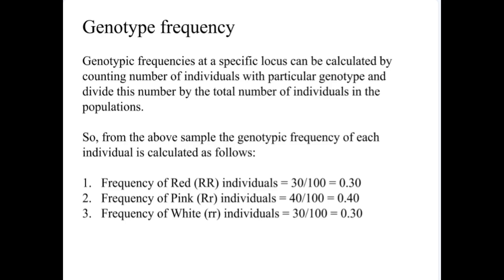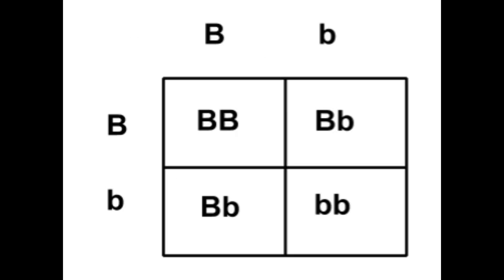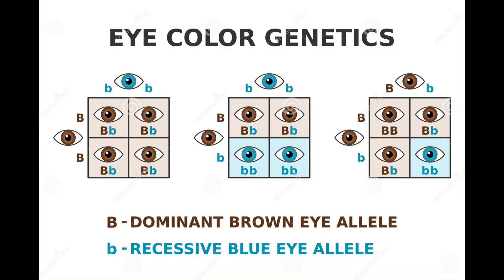We know genotype to be an organism's complete genetic makeup — the alleles that it carries for particular genes at a specific location or loci. Genotype frequency refers to how many times possible allele combinations show up in the population. We always represent genotype with those letters — the capital letter representing dominant and the lowercase letter representing recessive. In the case of eye color, brown eye color could be represented by big B, big B — homozygous dominant. Or little b, little b — homozygous recessive for blue. Or your genotype could be big B, little b — which is heterozygous for both.